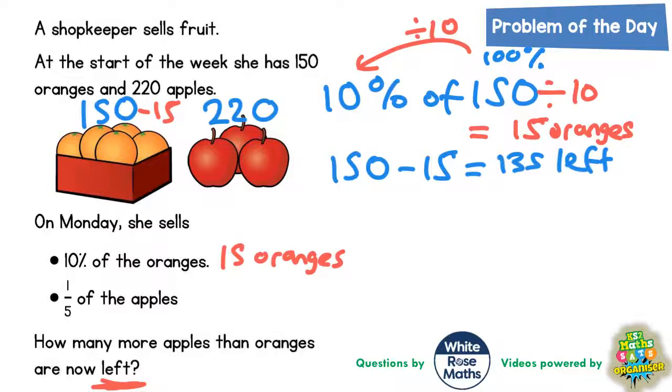Now as for the apples, she sells a fifth of the apples. So we need to figure out what one-fifth of 220 is. And the way to do this is to share 220 by 5. A fifth of anything means divide it by 5.